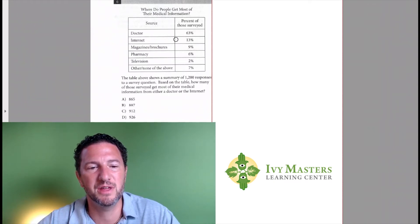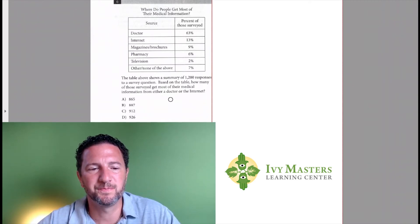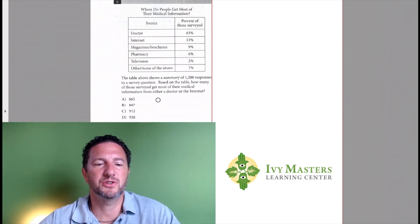Where do people get most of their information? The source we've got here: doctor, you can see 63%; internet is second with 13%; and then it decreases from there—magazine, brochure, pharmacy, television. The question is: table above shows a summary of 1200 responses to a survey question.